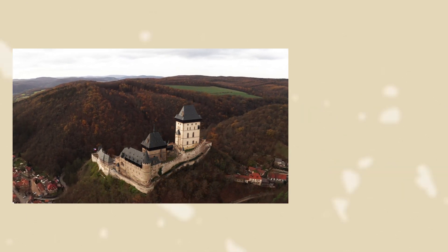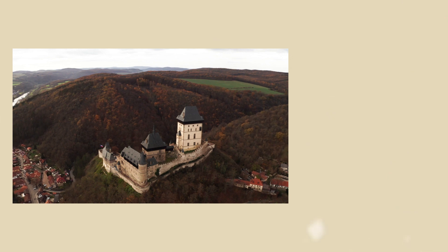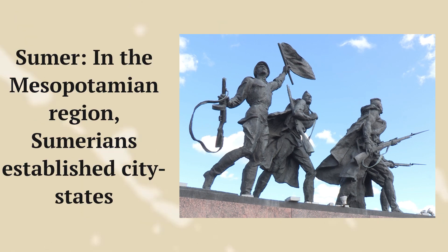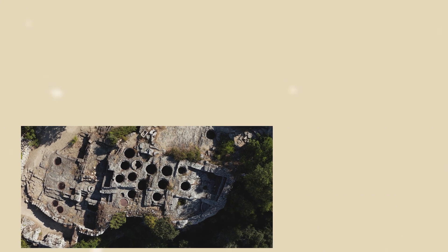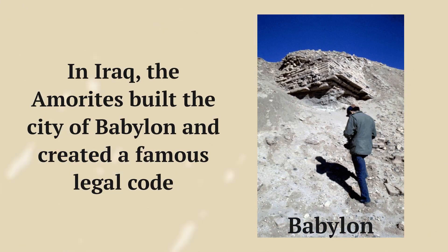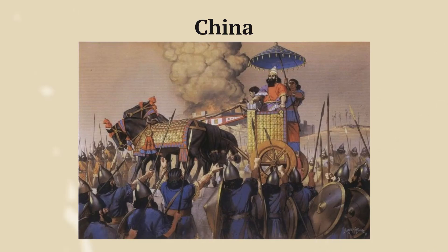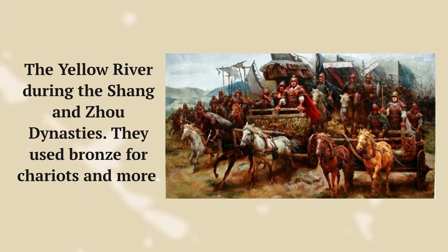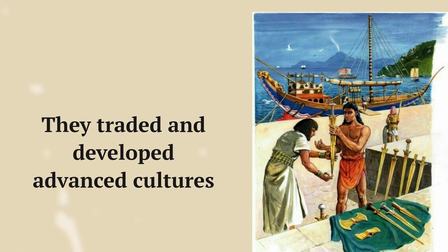The great civilizations of the Bronze Age included Sumer, where Sumerians established city-states like Eridu and Uruk, used bronze, and invented writing. In Iraq, the Amorites built the city of Babylon and created a famous legal code. The Assyrian Empire stretched across modern Iraq, Turkey, and Egypt, known for its powerful military. In China, Bronze Age civilizations centered around the Yellow River during the Shang and Zhou dynasties, using bronze for chariots. Greece became a hub of activity with the Cycladic, Minoan, and Mycenaean civilizations, who traded and developed advanced cultures.